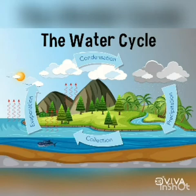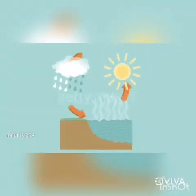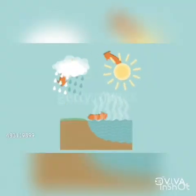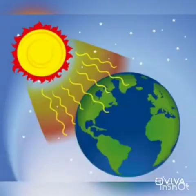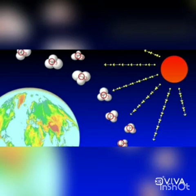Air plays an important role in water cycle — evaporation, then condensation and then precipitation. Yeh saare steps water cycle ke possible hota hai air ke karan. The atmosphere protects us from the harmful effects of ultraviolet radiation coming from the sun. Ultraviolet radiation bohut hi harmful hota hai living organisms ke liye, aur atmosphere is harmful effects se humain protect karta hai.